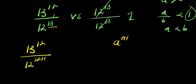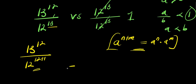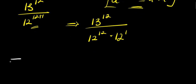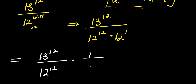Applying the identity a^(n+m) = a^n × a^m, this gives us 13 power 12 divided by 12 power 12 times 12 power 1. I can then factor out 1 over 12, so I am simply going to have 13 power 12 divided by 12 power 12, all times 1 divided by 12.